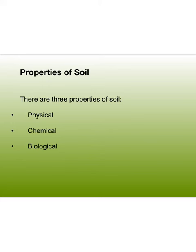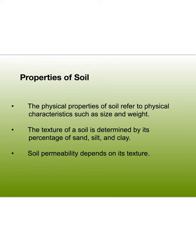We're going to look at physical, chemical, and biological properties of soil in lab this week and next week leading up to Christmas break, doing soil labs to eventually test areas around San Antonio for ideal planting. Physical properties refer to characteristics such as size and weight — when we look at the soil triangle, we're examining the percentages of sand, silt, and clay. Permeability depends on texture.